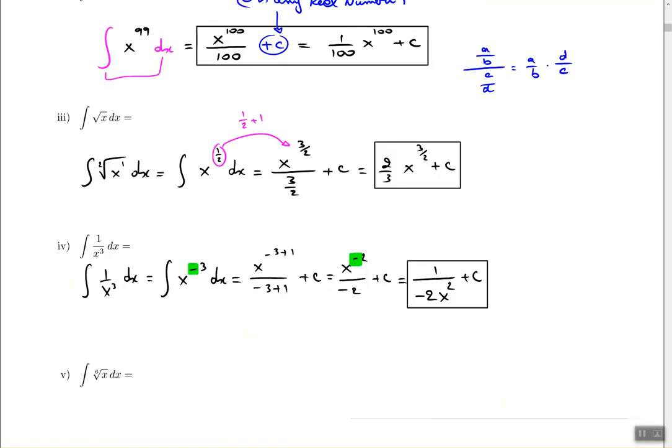So far we have two rules to memorize or two rules to be aware of. If you have a radical in the problem, radicals are not okay, convert them to fraction power. And if you have x in the denominator, that's not okay either. Convert it to the numerator and add the negative exponent.